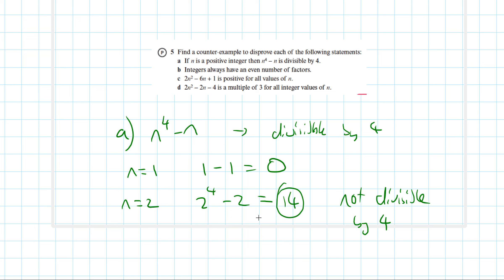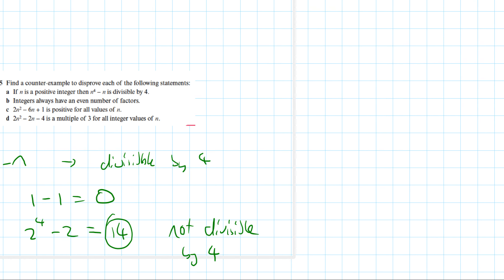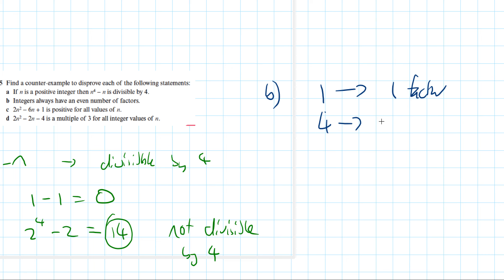Part B: integers always have an even number of factors. n=1 is straightaway a counterexample because 1 only has one factor, which is odd. Also, n=4 has factors 1, 2, and 4 — that's 3 factors, which is also odd. Any square number has an odd number of factors, so we already have multiple counterexamples here.